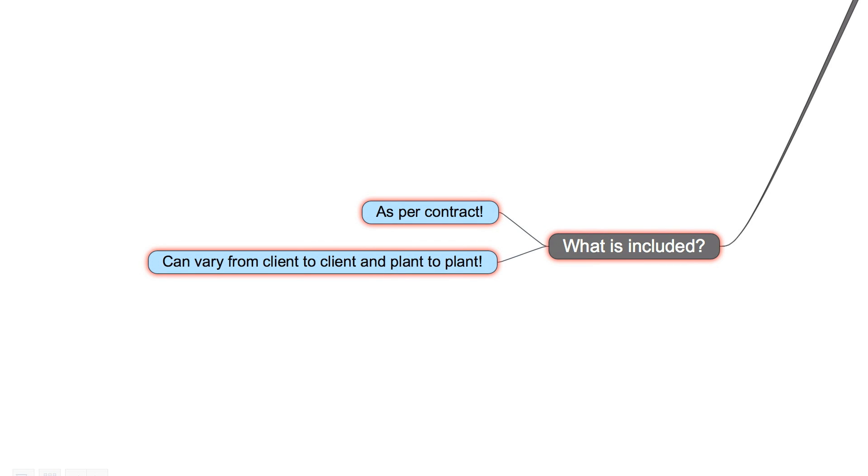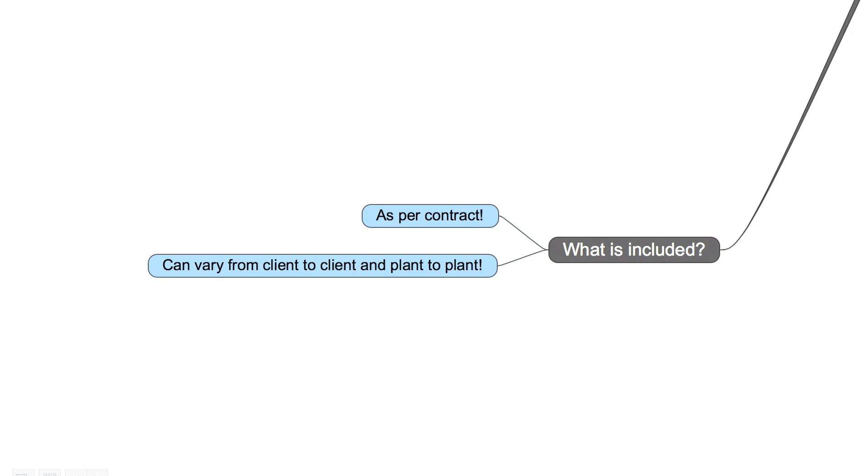So, now the big question: what is included into mechanical completion? The only right answer is it's defined in the contract. And this can vary from client to client and from plant to plant. So if you are not sure which activities are really included into mechanical completion, take the contract, read it, read it again, understand it and then you are really sure what is included. I will give you two examples.